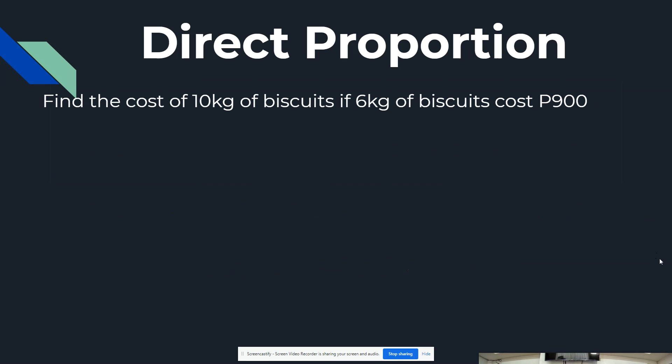So, find the cost of 10 kilograms of biscuits if 6 kilograms of biscuits cost 900 pesos. So 10 kilograms is how much? If we have 6 is to 900, that will be our question for this direct proportion.